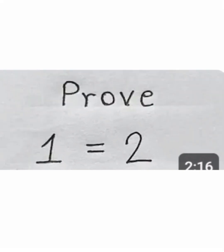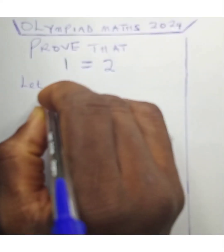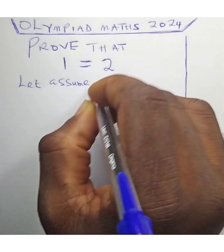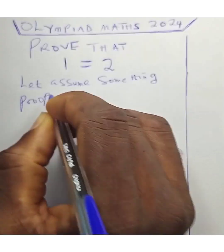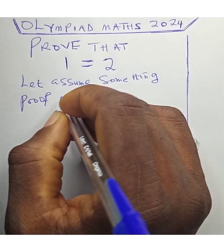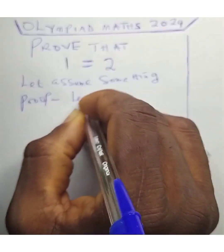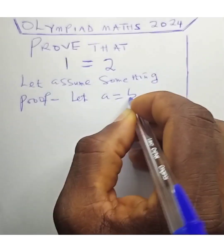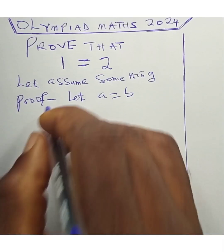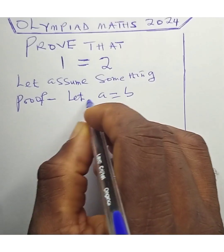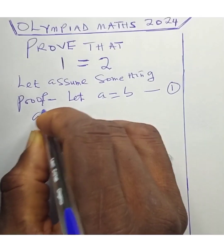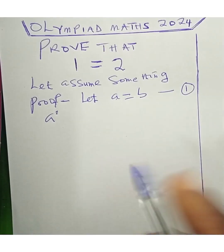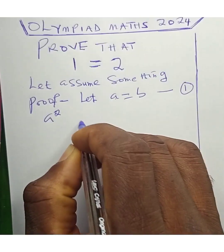Hi guys, welcome to my online math class. We are asked to prove that 1 equals 2. To do that, let's assume something. Let's assume a equals b — call this equation 1. Multiply both sides by a, and we get a squared equals ab.